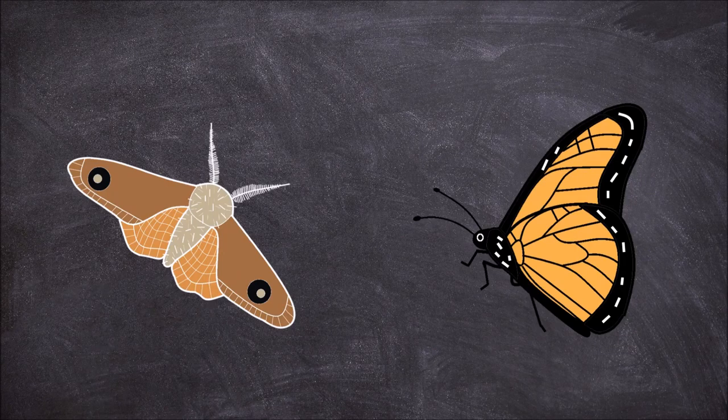In this video we are going to look at the differences between the two easily confused groups of the order Lepidoptera, the moths and the butterflies. Moths and butterflies are both similar looking and easy to confuse. Despite this, both groups have unique features that are useful in distinguishing whether a species is a moth or a butterfly.